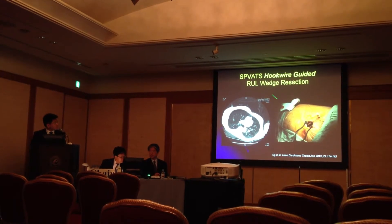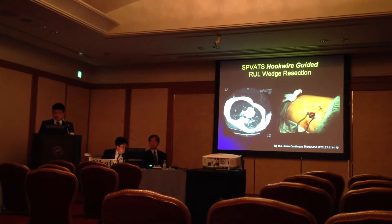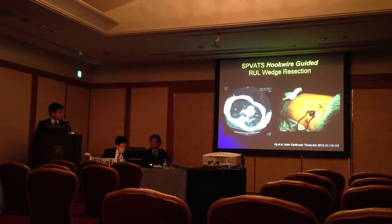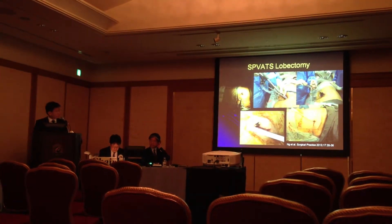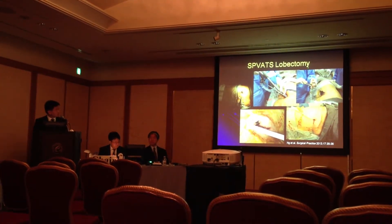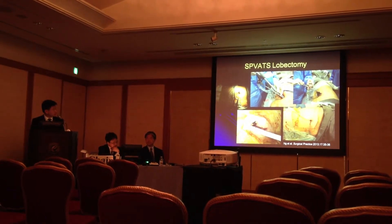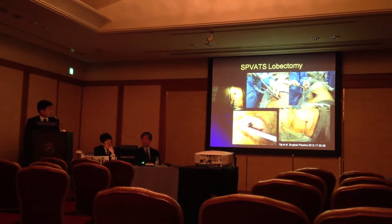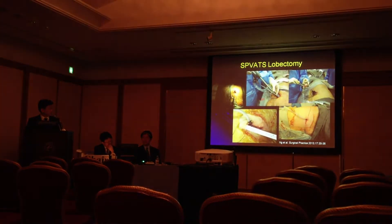For some wedge resections we use wire guidance, and some are done using finger palpation or CT guidance. This is the sort of wound we're looking for — a 3 cm wound. For a VATS lobectomy, all the instruments have to fit through this one wound, including the scope, the stapler, and the retractor, and we're able to remove the lobe and specimen through a 4 cm wound at the end.